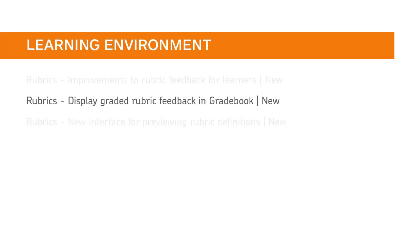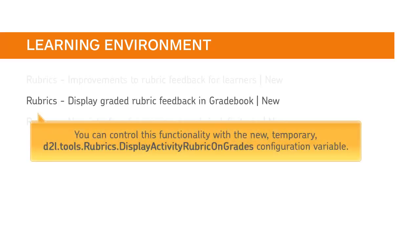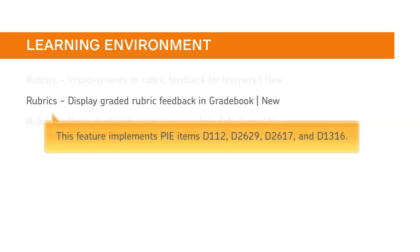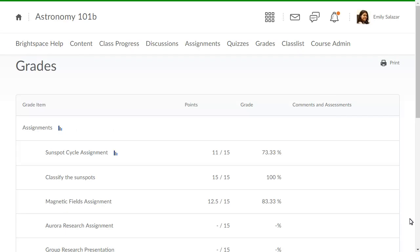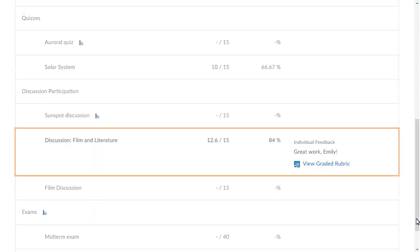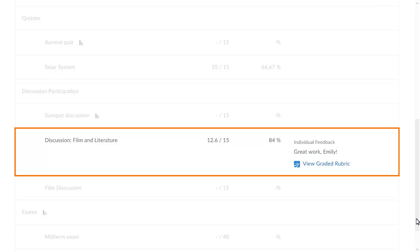Learners can now view graded rubrics and associated feedback in the gradebook, and can view the completed rubric in the associated tool. You can control this functionality with the new, temporary D2L Tools Rubric Display Activity Rubrics on Grades configuration variable, which is off by default. This feature implements PI Items D112, D2629, D2617, and D1316. Now, when learners view their gradebook, they will have direct access to all their feedback in one place.